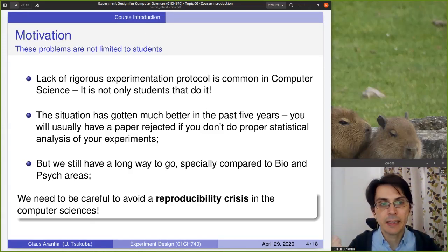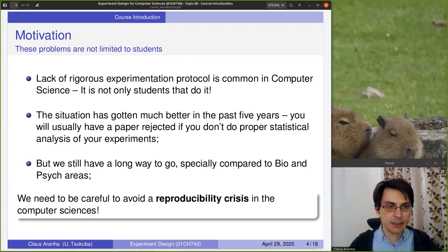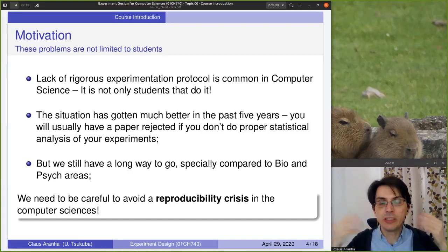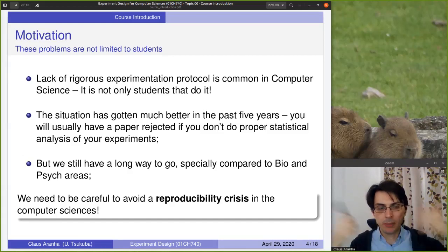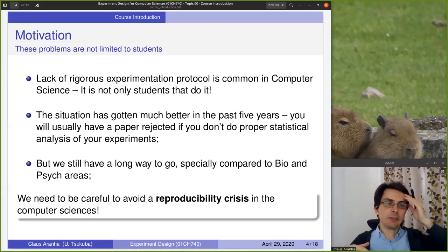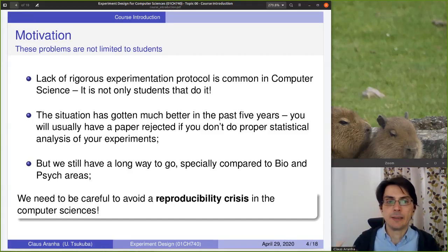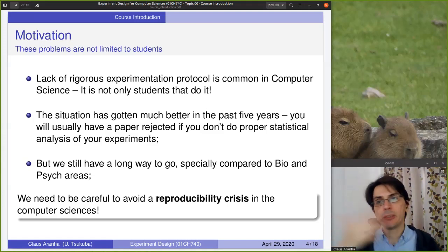When I was an undergrad student, we had a physics experiment lecture where we would drop some balls and calculate gravity from the speed of the balls — and that was experiment design. But no one in that course said that what I was doing for physics I would also need to do for computer science. Many people think: the computer is a simulation, it's perfect, we don't need to replicate it, there are no errors, no noise. But there is a lot of noise, there are a lot of things that need to be designed. Experimenting in computer science needs to be as rigorous, if not more, than experimenting in physics, social sciences, biology, or medicine.